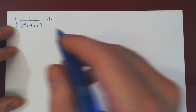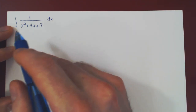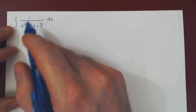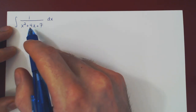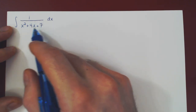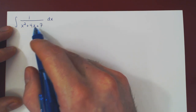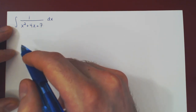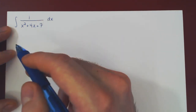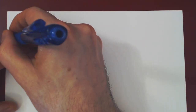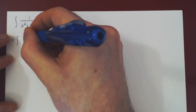Let's begin with a warm-up example. We want to find the anti-derivative of 1 over x squared plus 4x plus 7. We have here a quadratic with a linear factor, a multiple of x. A natural first step would be to eliminate the linear factor by completing the squares. Let's see what happens once we complete the squares.